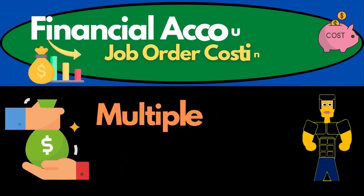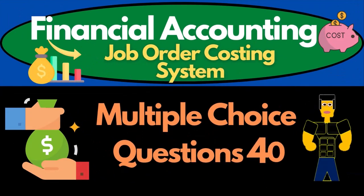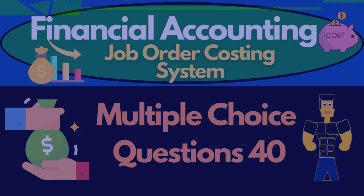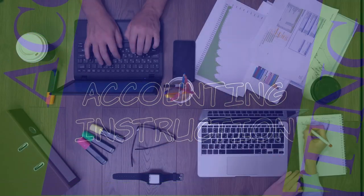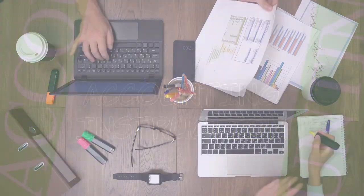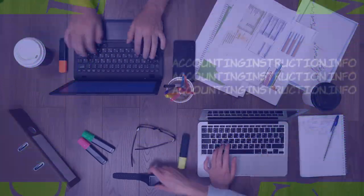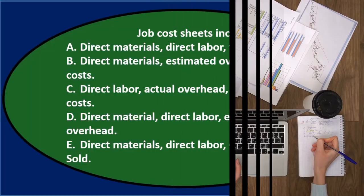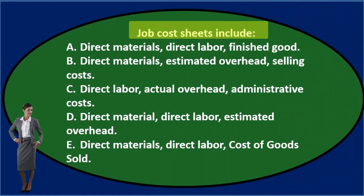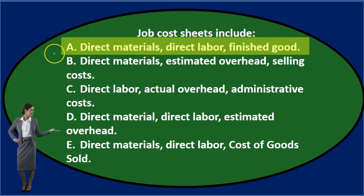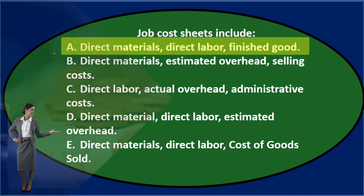In this presentation, we will take a look at multiple choice questions related to a job cost system. First question: Job cost sheets include A. Direct materials, direct labor, finished goods.